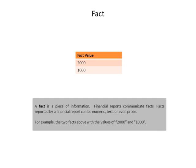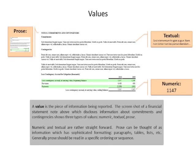Although we saw numeric facts in the previous example, there are three different types of values. A value is a piece of information that is being reported. The screenshot of a financial statement note, which discloses information about commitments and contingencies, shows the three types of facts: numeric, textual, and prose.